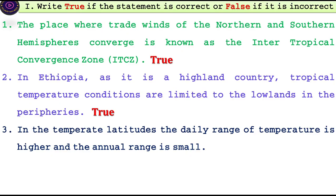In the temperate latitude, the daily range of temperature is higher and the annual range is small.